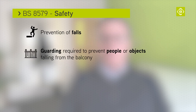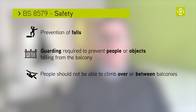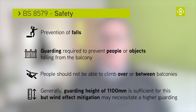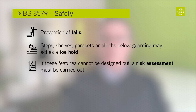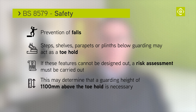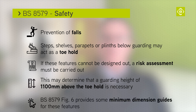Guarding is required to prevent people or objects from falling from the balcony. People should not be able to climb over it or from one balcony onto another. This is generally achieved if the guarding is at least 1100mm high, but don't forget what was discussed previously regarding wind effect, which may necessitate higher guarding. Steps, shelves, parapets or plinths below guarding may act as a toehold if they are greater than 25mm deep. If features such as this cannot be designed out, there should be a risk assessment carried out, including whether to increase the guarding height to 1100mm above the height of the toehold feature. Figure 6 provides some useful minimal dimension guides for dealing with such features.